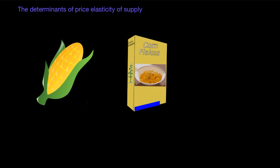Here's our first two goods. On the left we have corn and on the right we have corn flakes. Which of these two goods do you think producers will be more responsive to price changes in a particular period of time, say two weeks following a price change? Well, you might be thinking that corn has a more inelastic response among its producers than corn flakes, and you would be correct.